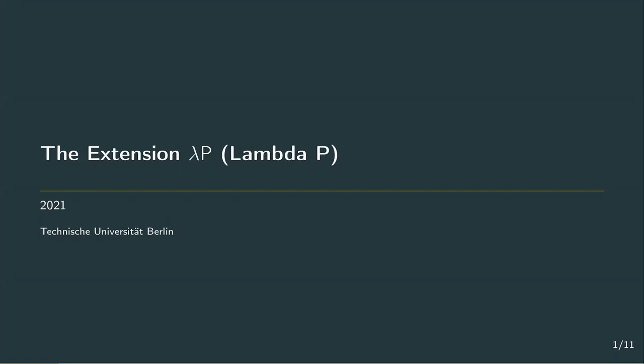Hello and welcome back to the fifth chapter of Lambda Calculus and Types. Today we're going to discover the last system before we can form the lambda cube. It's called lambda p.